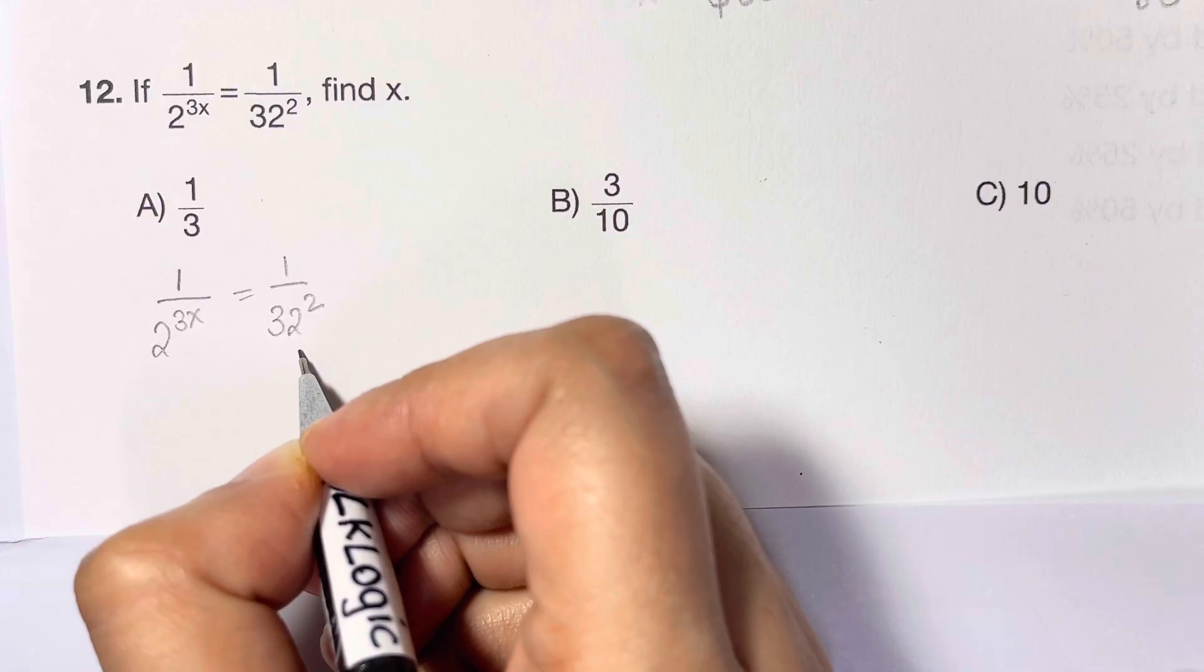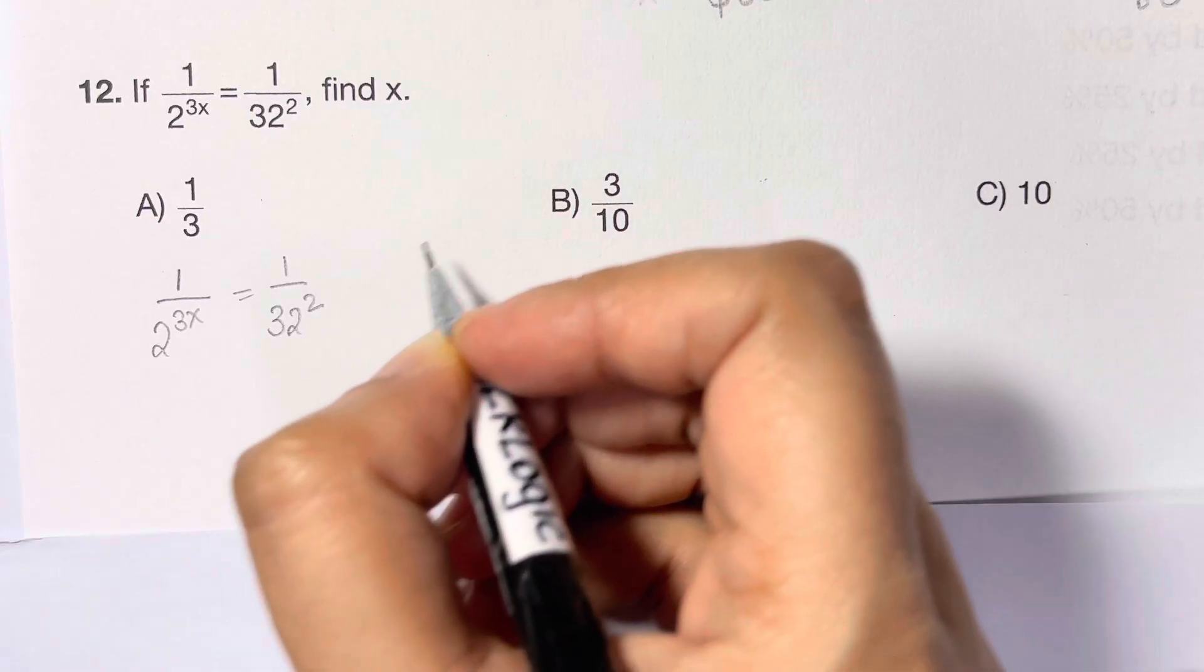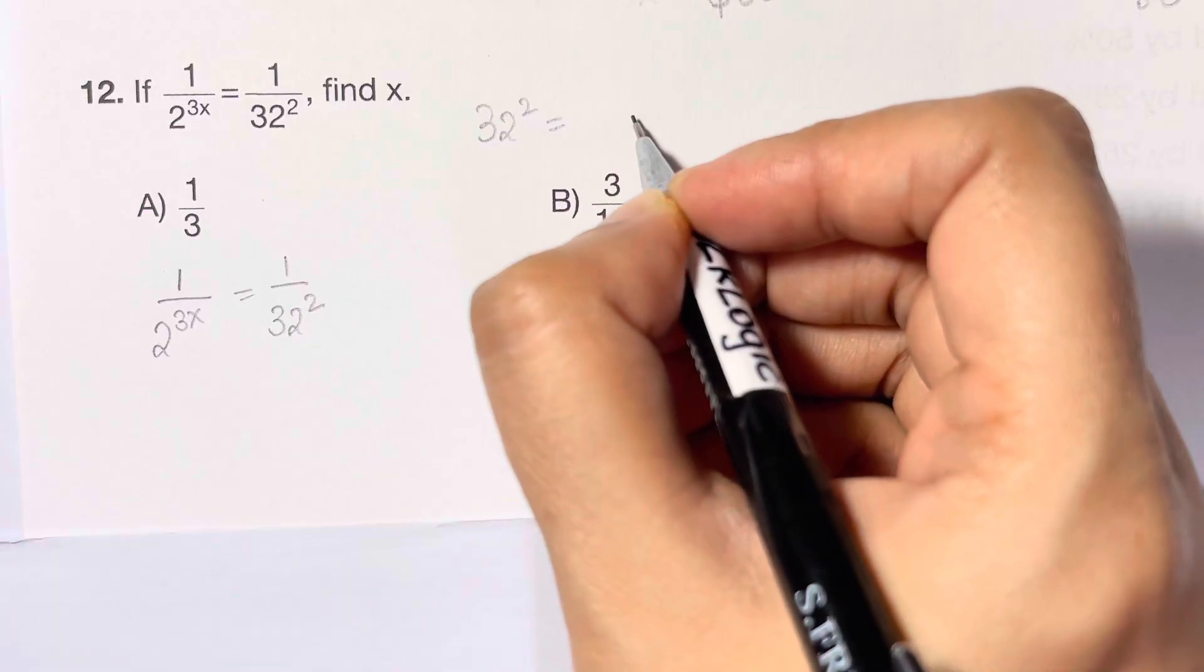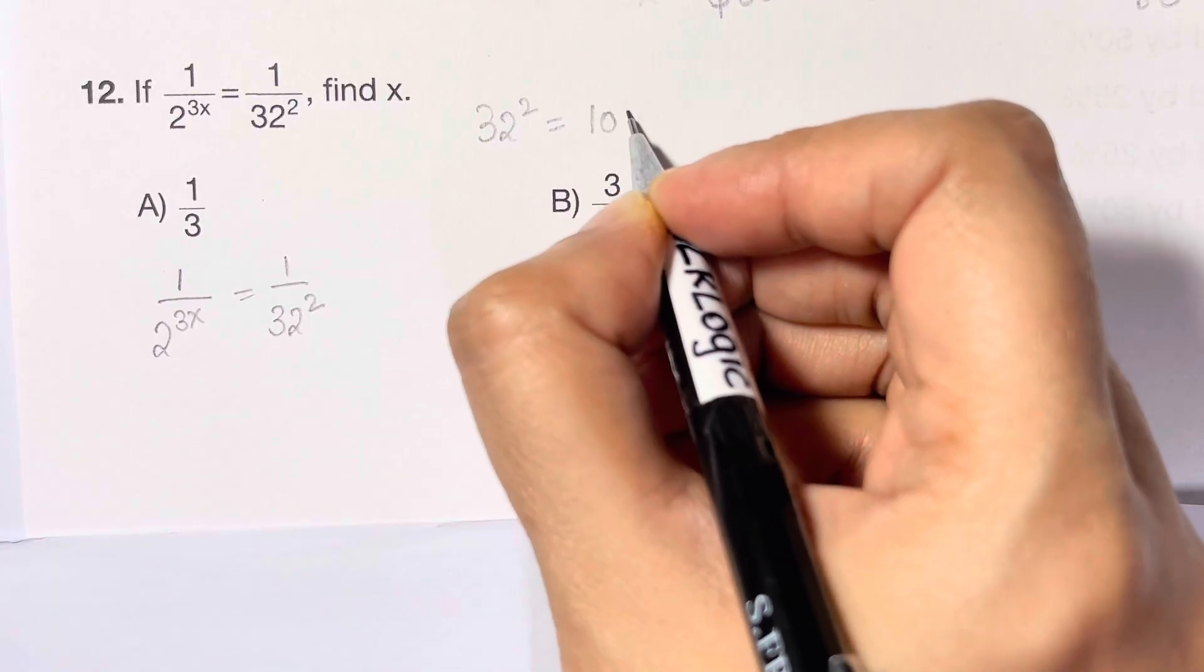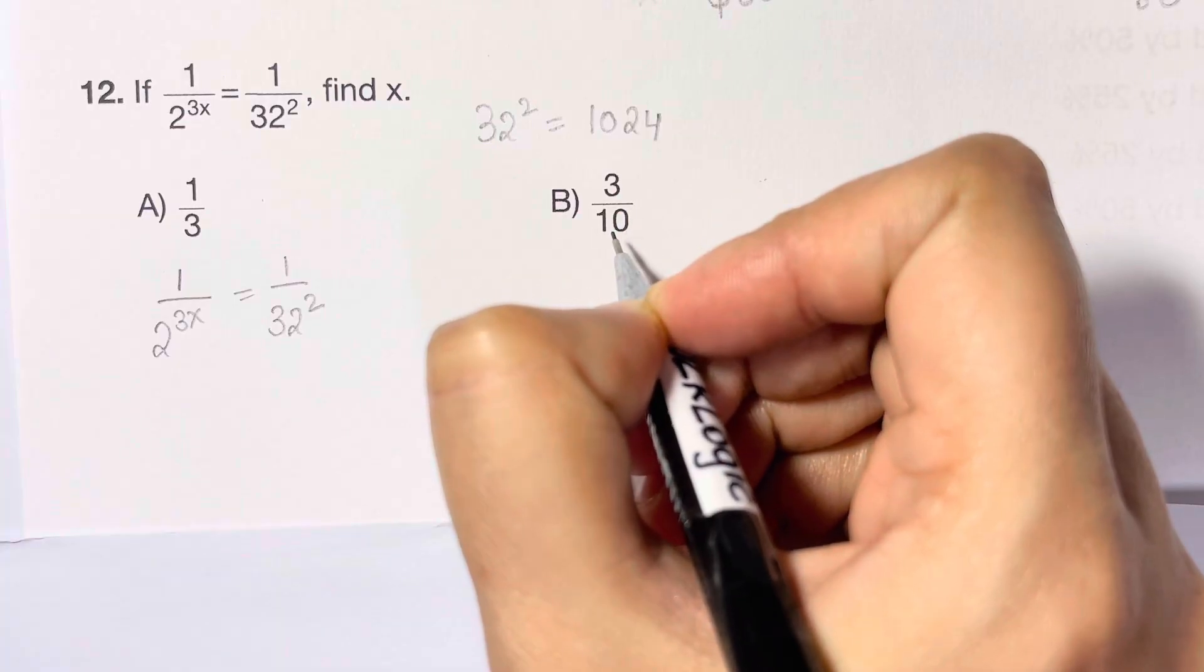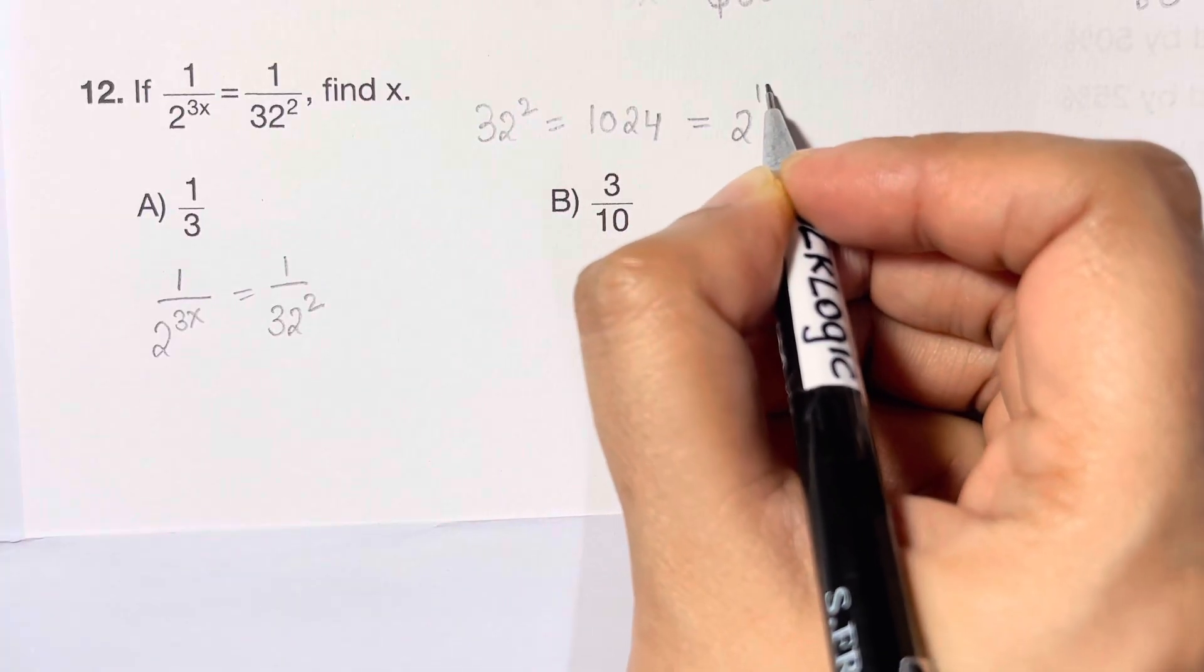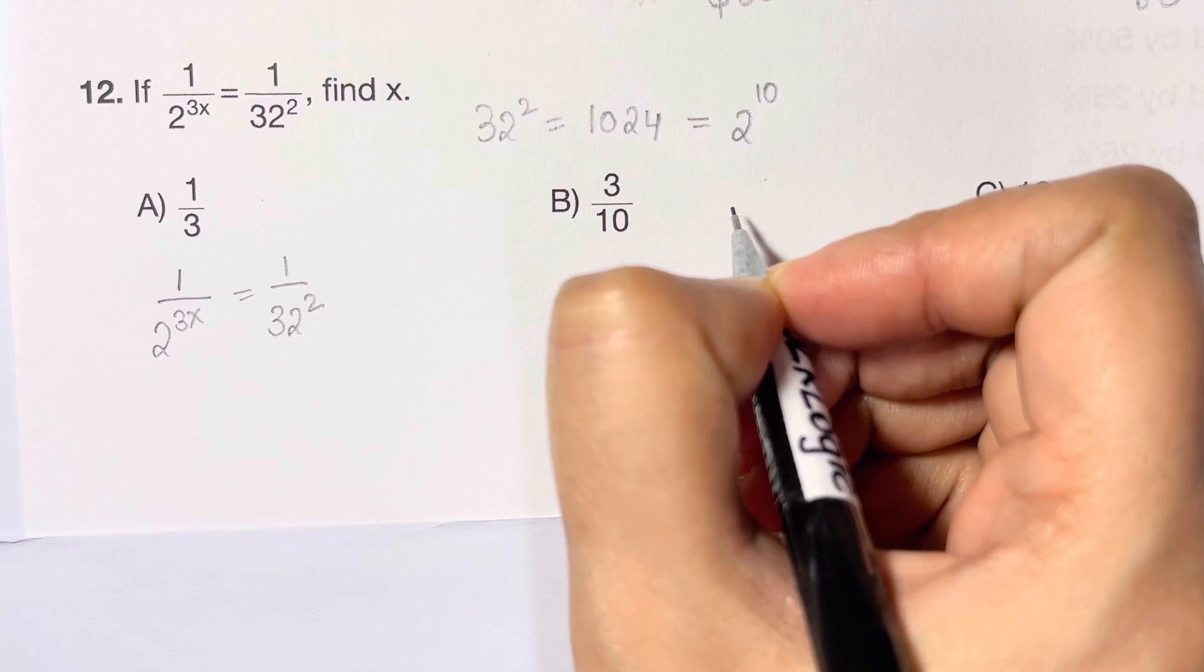Now let's write 32 as the base of 2. So 32 squared can be written as 1024, and that is equal to 2 to the power of 10. As in the base of 2, so we can substitute 2 to the power of 10 in place of 32.